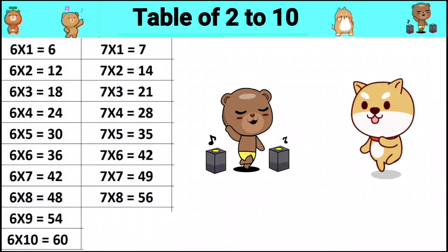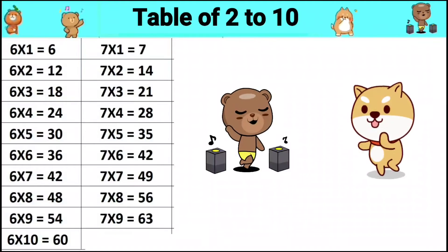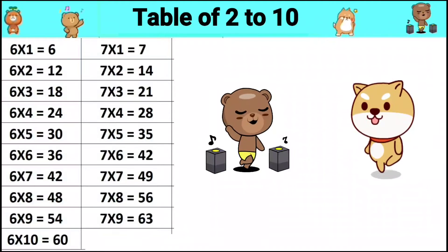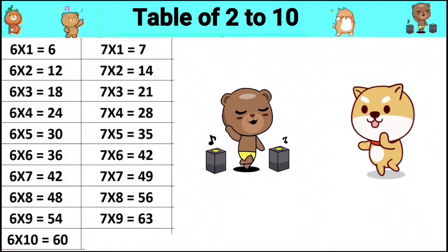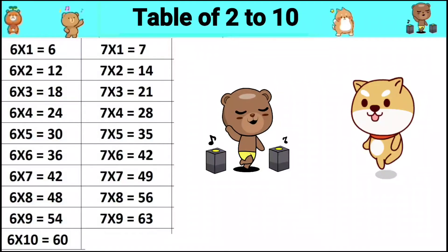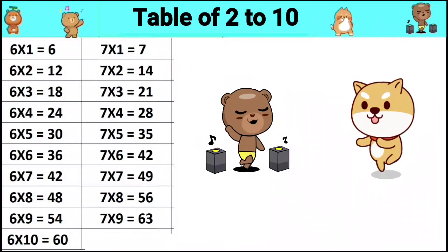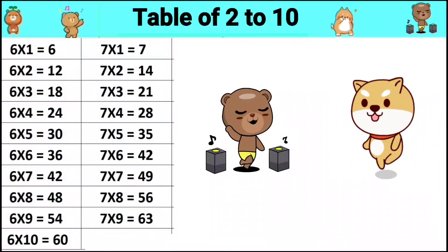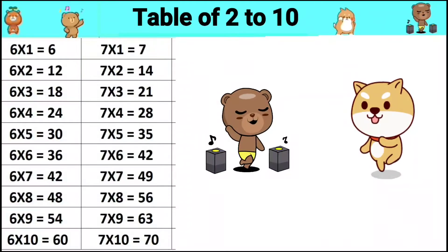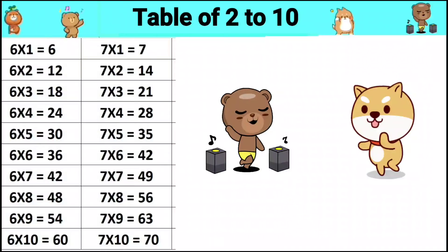7 eights are 56, 7 nines are 63, 7 tens are 70.